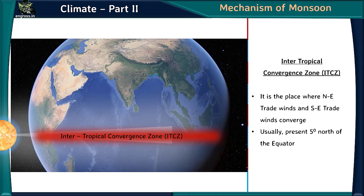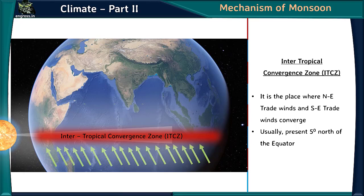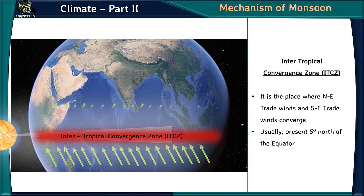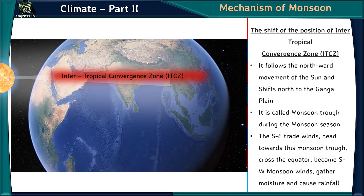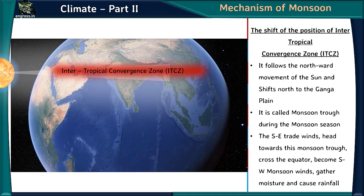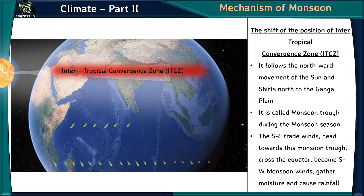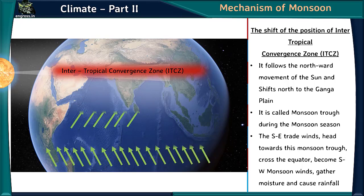The second factor is the movement of the ITCZ — Intertropical Convergence Zone — where northeast and southeast trade winds converge, usually 5 degrees north of the equator. The ITCZ follows the northward movement of the sun and shifts to the Ganga Plain, becoming the monsoon trough during the monsoon season. The northeast trade winds head towards this monsoon trough, cross the equator, become southwest monsoon winds, gather moisture, and cause rainfall.